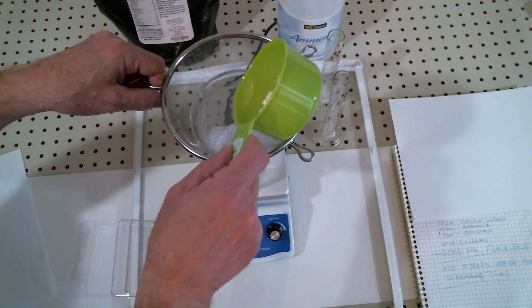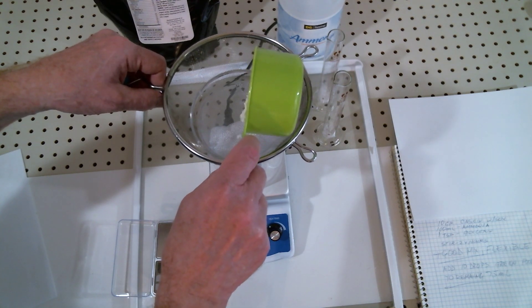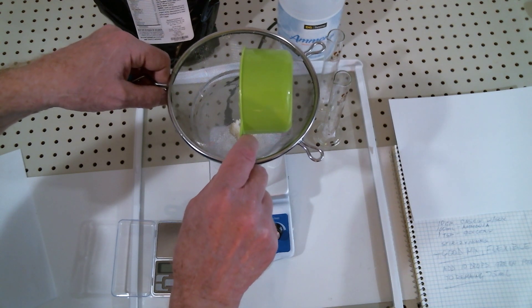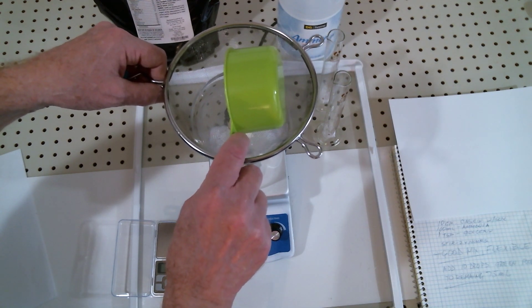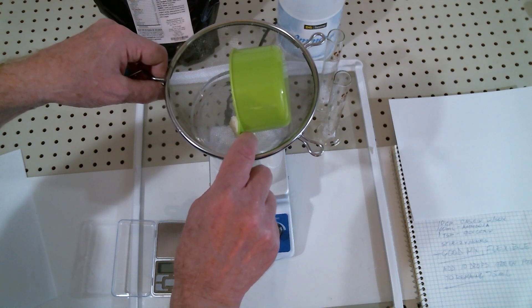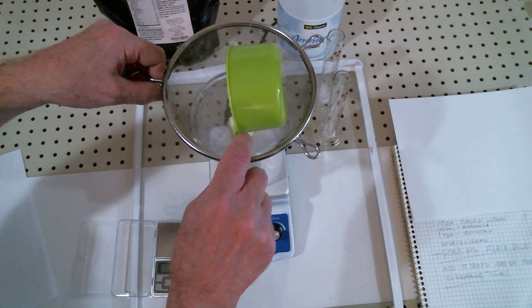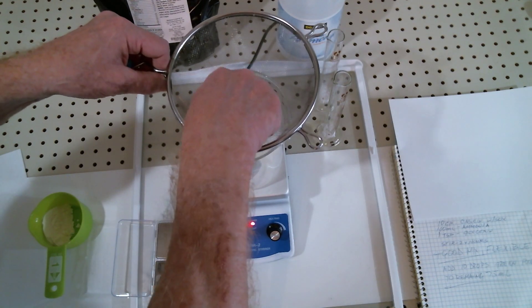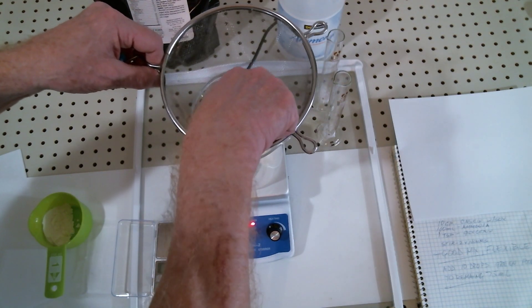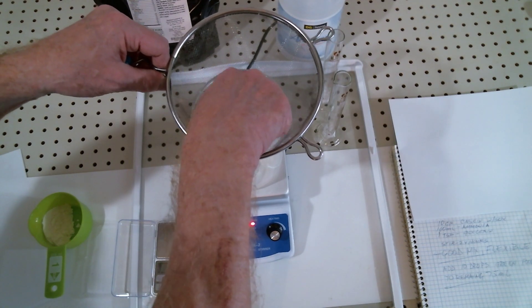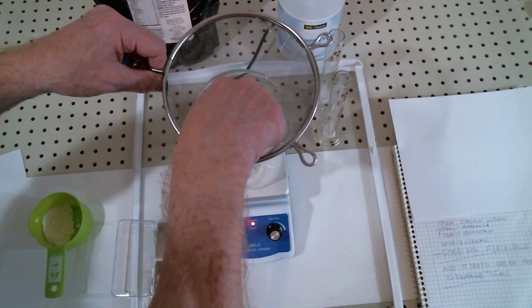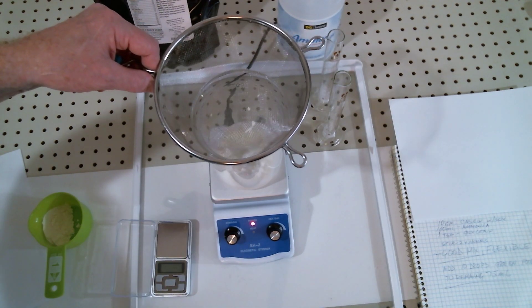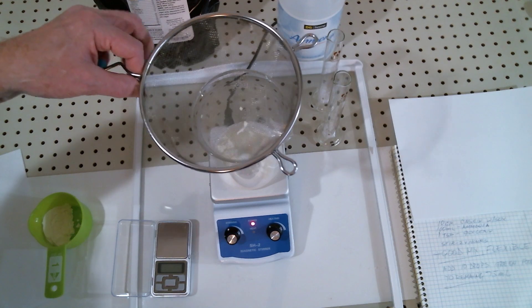Start sifting in the casein a little at a time. If it clumps up and goes solid, just stir it by hand. Give it some time for the ammonia to dissolve the casein and it will completely go into solution. I'm not going to bore you with the entire process.